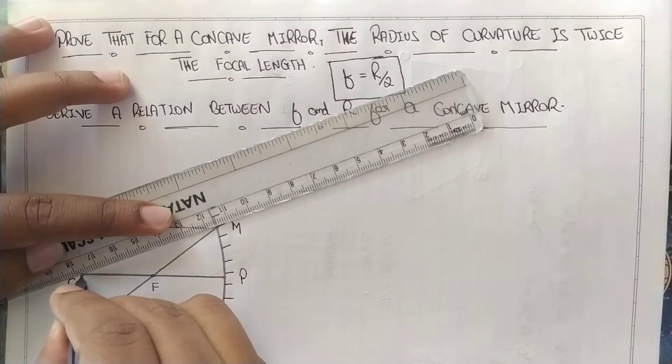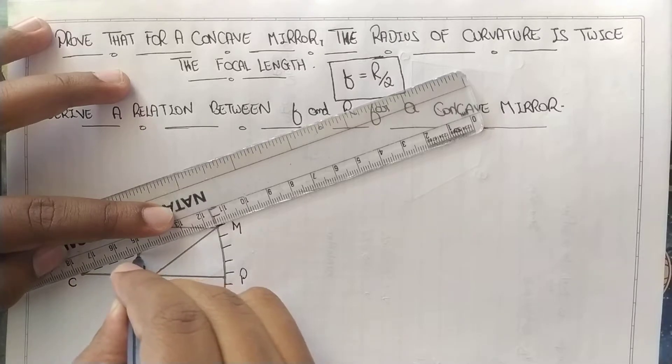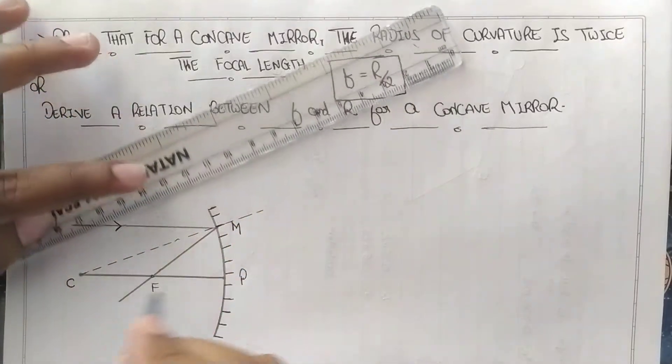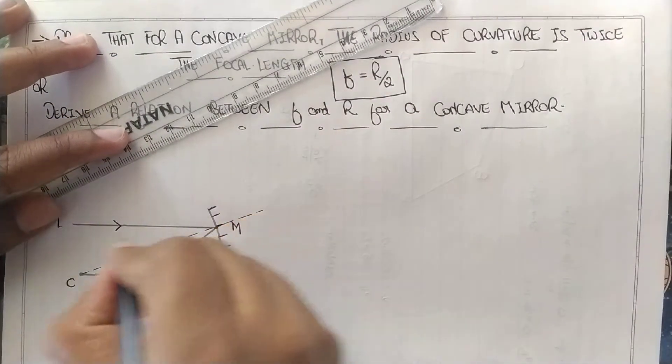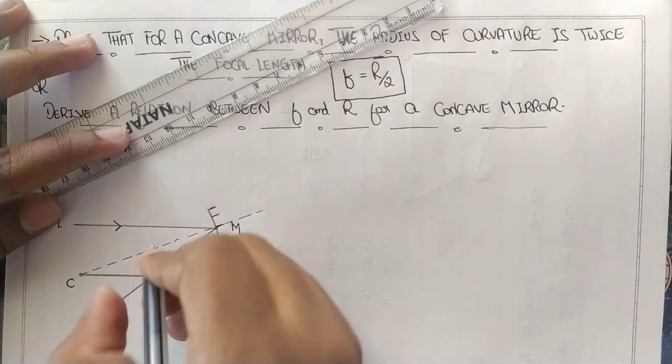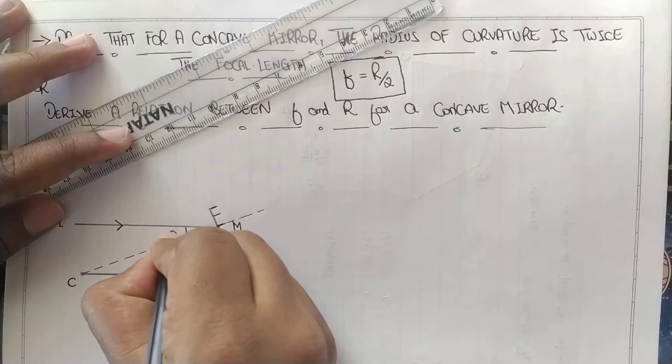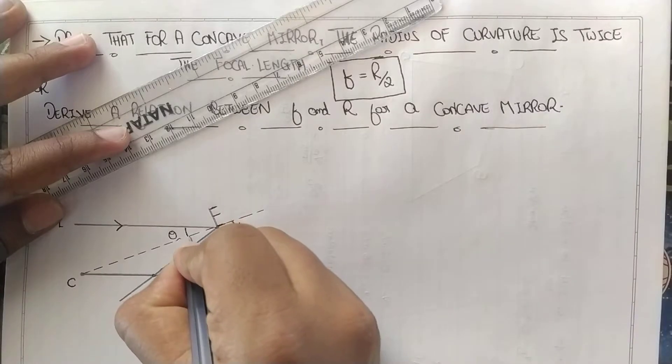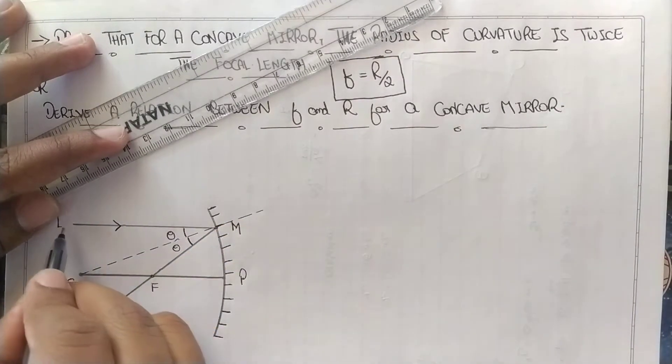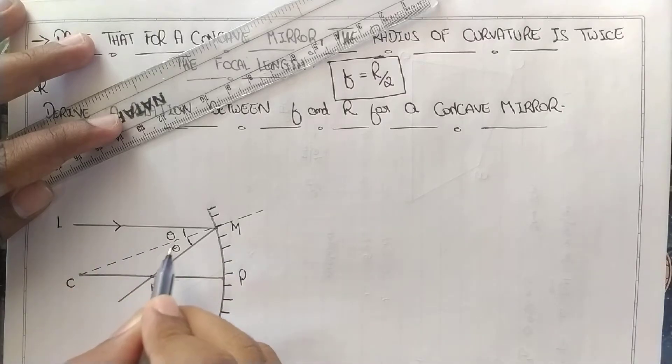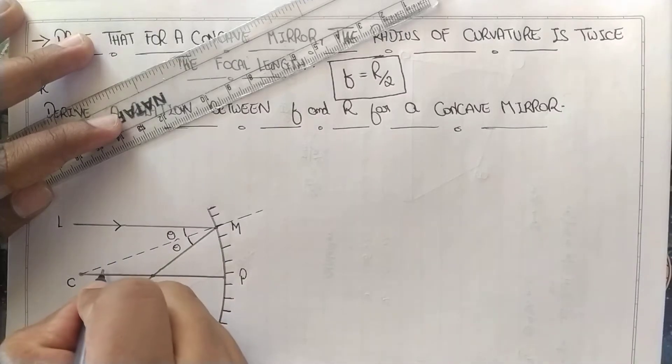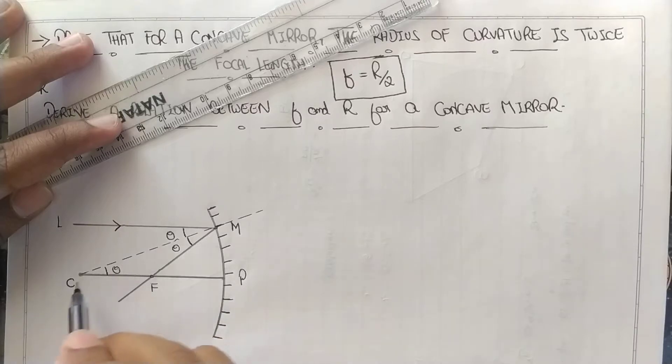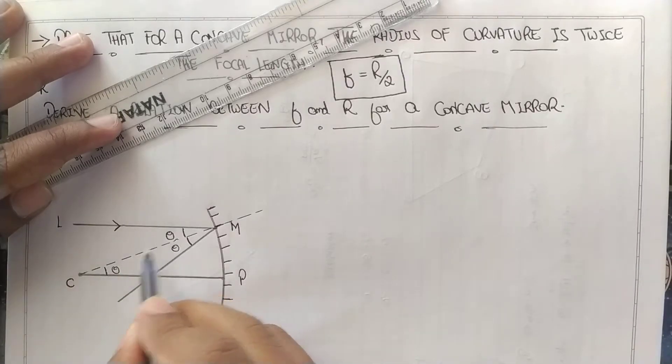As we know, there will be a normal passing through the angle of incidence and angle of reflection, and that normal here is CM. The angle between the incident ray and the normal is theta, and the angle between the normal and the reflected ray is also theta. Angle LMC is theta, so angle MCP is also theta because LM and CP are parallel lines forming alternate angles.